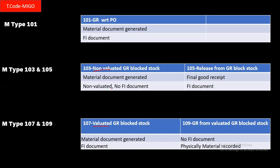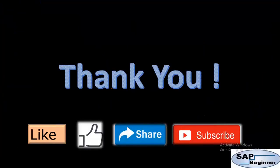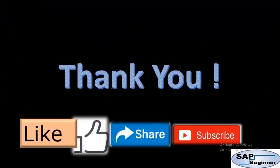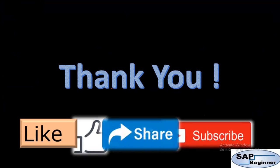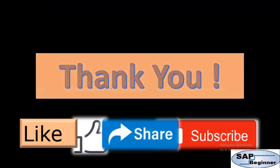Similarly at 107, QC inspection is done at the vendor's place, so the material is not yet received in company stock and cannot be used. The system will not ask for a storage location for 107 either. After receiving the material in company premises, we can release it from GR blocked stock. That's it for today — thank you, please like, share, and subscribe for more video updates.